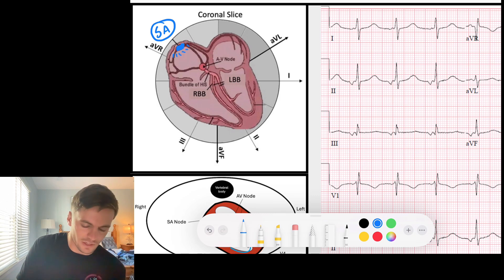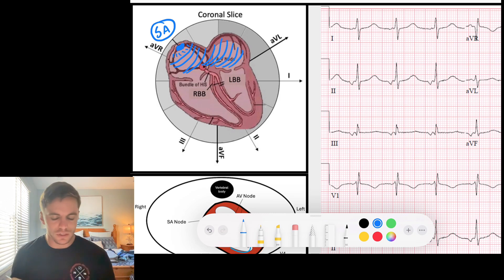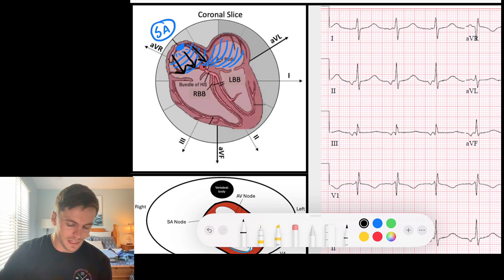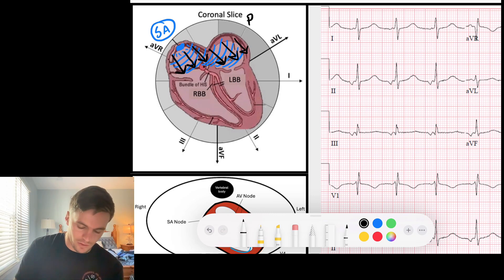It's the pacemaker node of the cell, and when it fires off it creates a wave of depolarization that spreads through the atria. Notice that this wave of depolarization goes from inferior to superior and from right to left as it's traveling across the atria. So this generates what we know as our sinus P waves.